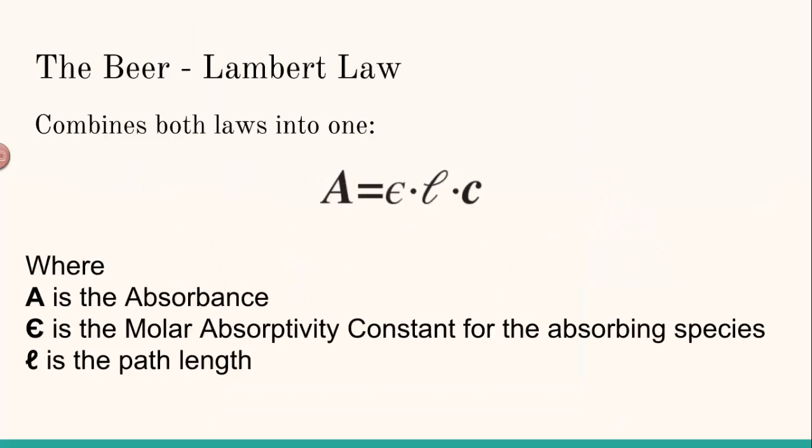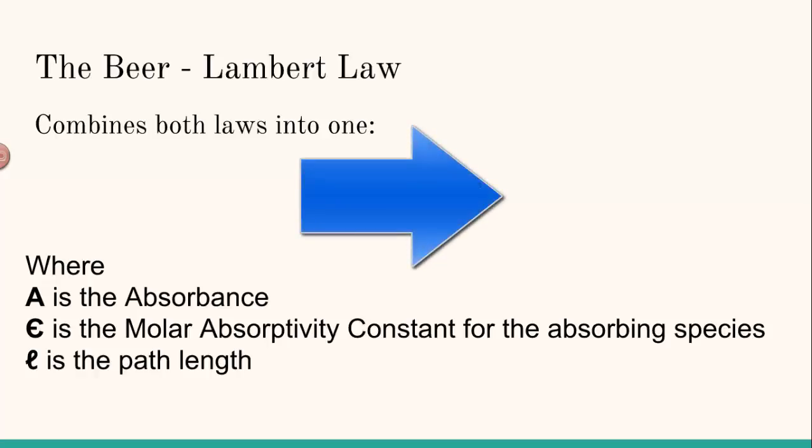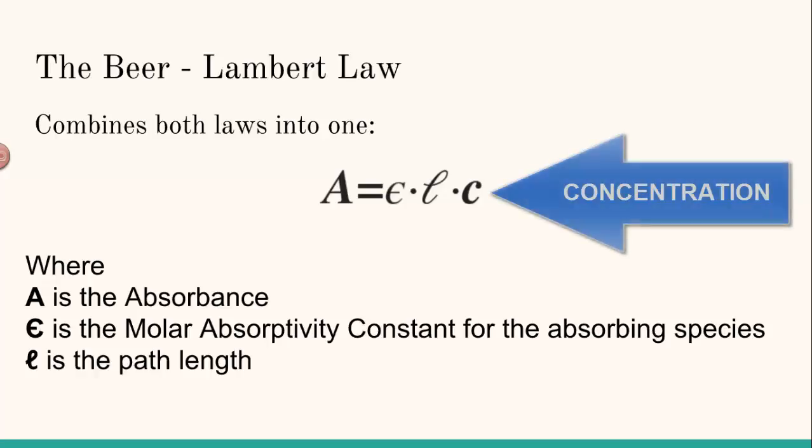So the Beer-Lambert Law combines the two of those into one law. We get this very famous equation: A equals epsilon times L times C. A is the absorbance of the solution, epsilon is the molar absorptivity constant, sometimes called the molar extinction coefficient. L is the path length, and C is concentration. So this relates those two.